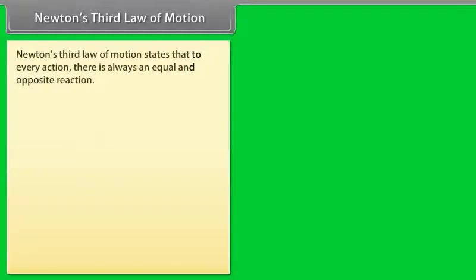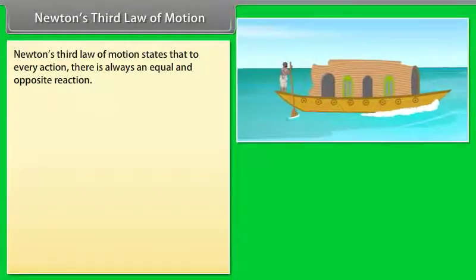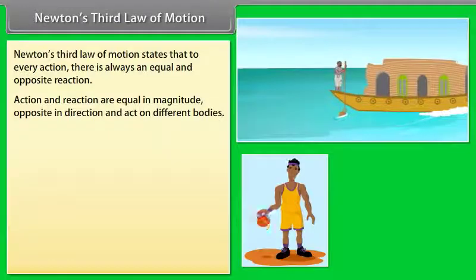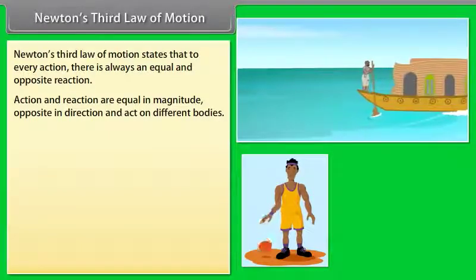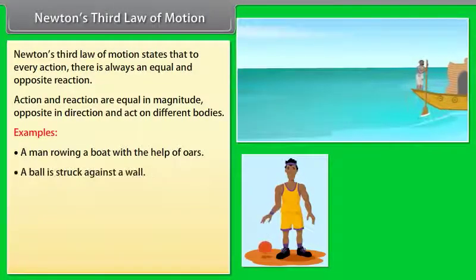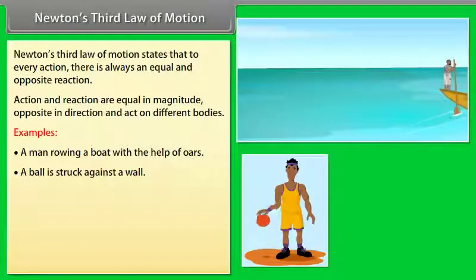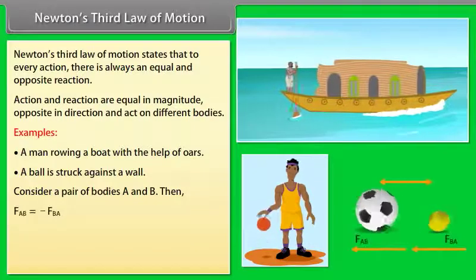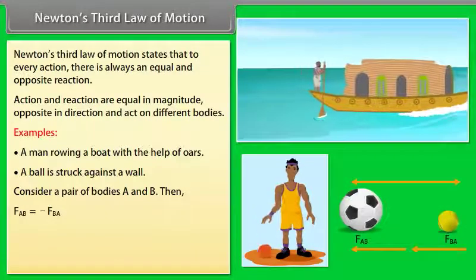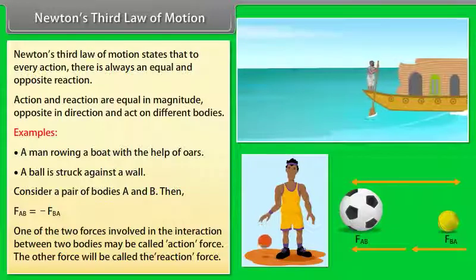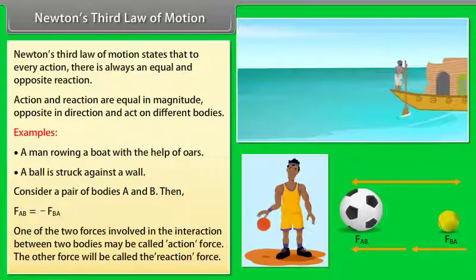Newton's third law of motion states that to every action there is always an equal and opposite reaction. Action and reaction are equal in magnitude, opposite in direction, and act on different bodies. Examples include a man rowing a boat with oars and a ball bouncing on the ground. For a pair of bodies A and B: F_AB = −F_BA. One force may be called the action force; the other is the reaction force.